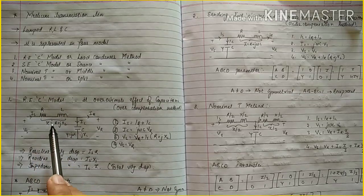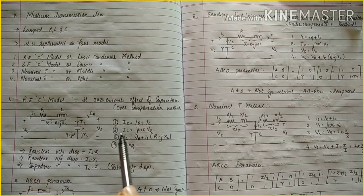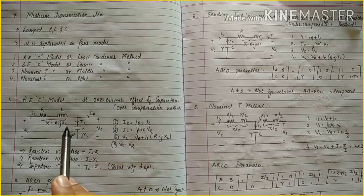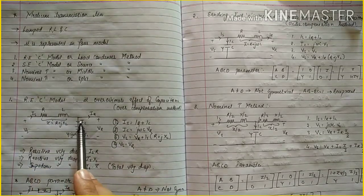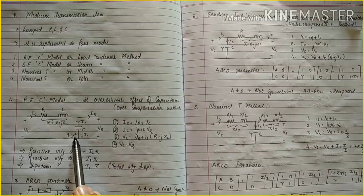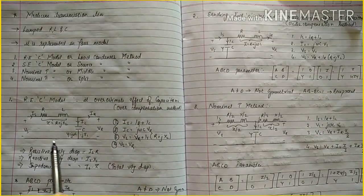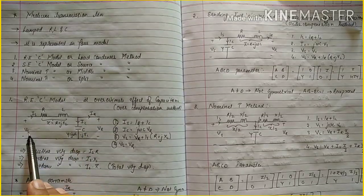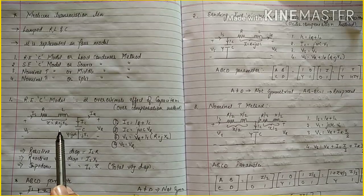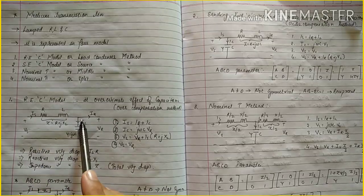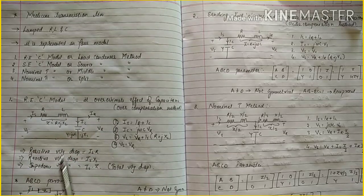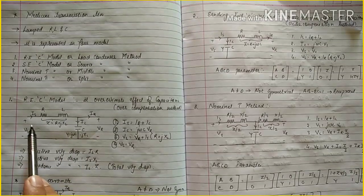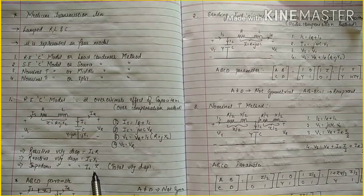Here Z impedance is drawn and your capacitor is here. By KCL, IS equals IC plus IR. IC is equal to j-omega-C times VR. Applying KVL, VS equals VR plus IS into (R + jXL). The resistive voltage drop is IS into R, reactive voltage drop is IS into XL, and impedance voltage drop IS into Z is the total voltage drop.